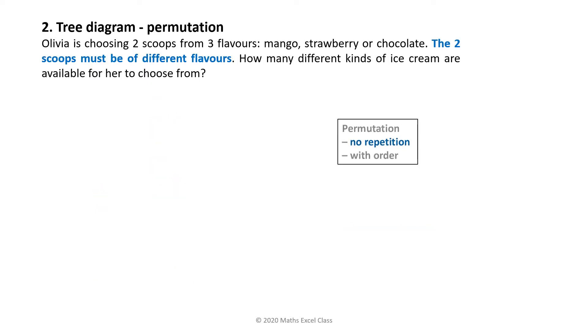In permutation, it is the same as power, but no repetition. We can still have order.